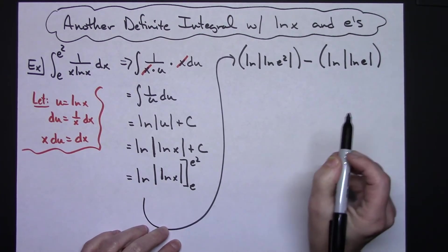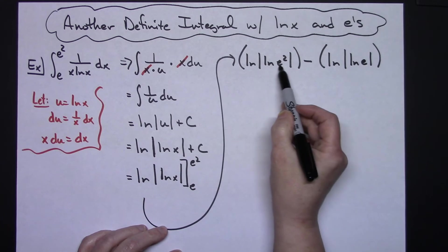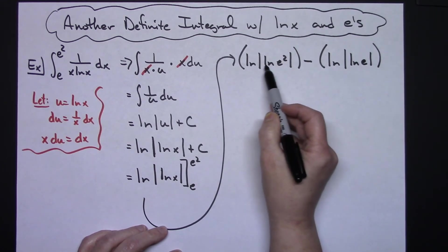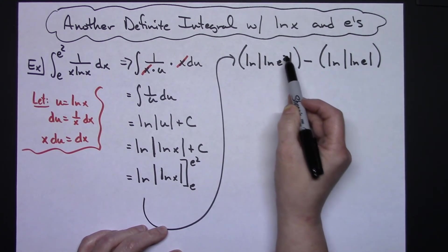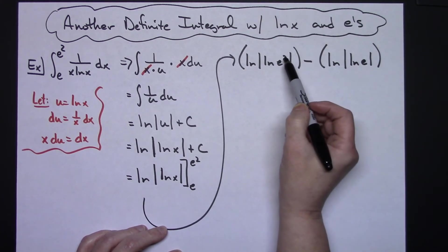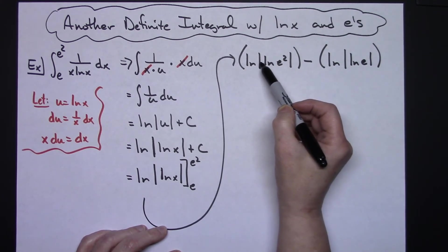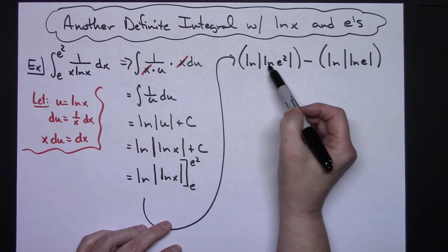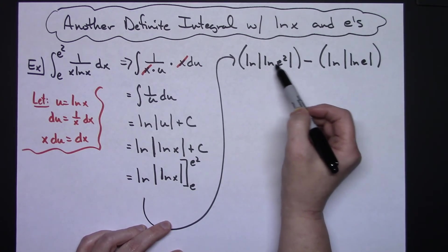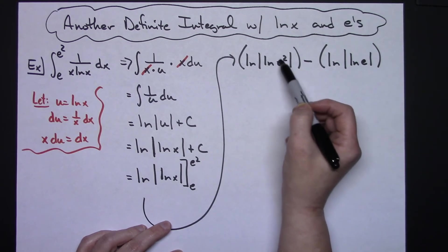You can do this without a calculator. Natural log of e squared: natural log of e is one, so it's going to be the exponent. I can jump that two down in front by laws of logarithms, and I've got two times the natural log of e. Natural log of e is one, so this gives me a two, so natural log of two.